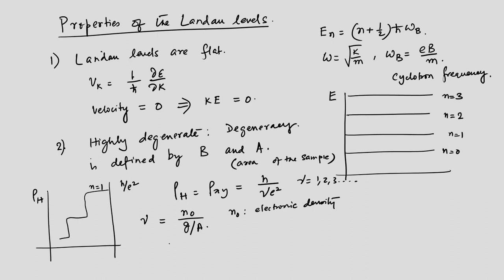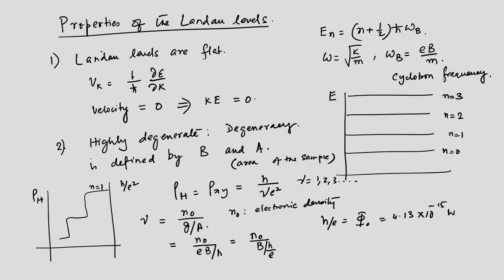This gives ν = n₀ / (eB/h) = n₀ divided by B/Φ₀, where Φ₀ = h/e is the flux quantum, which has a value of 4.13 × 10⁻¹⁵ weber. So ν = n₀Φ₀/B. The integer you see in the plateaus is related to the degeneracy in exactly this fashion.